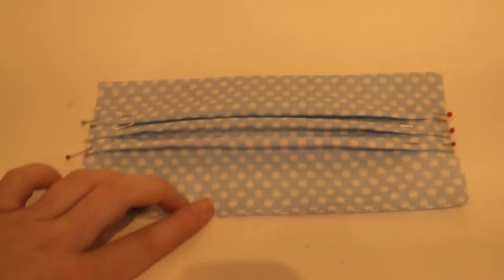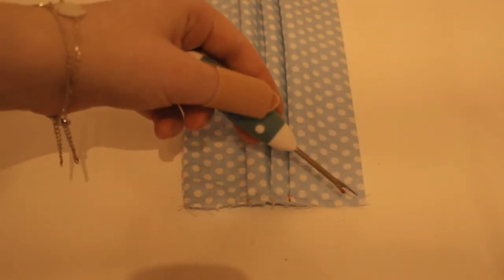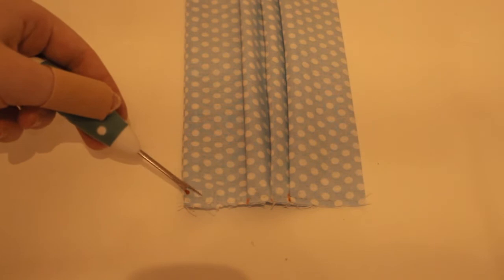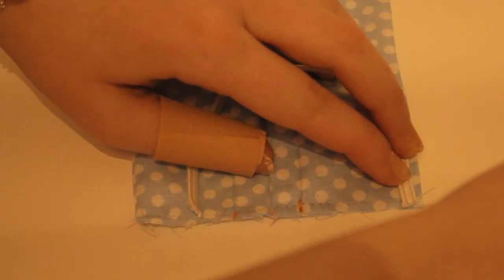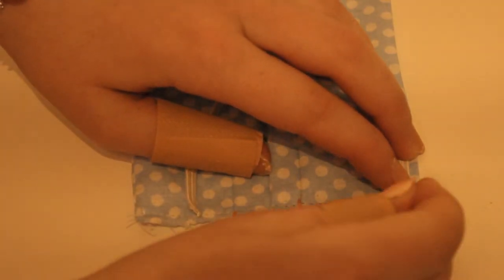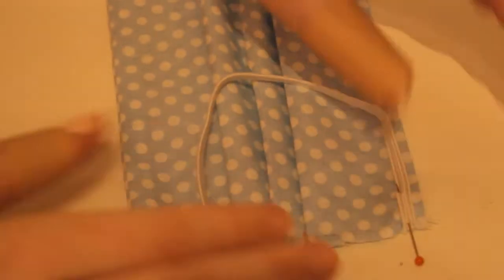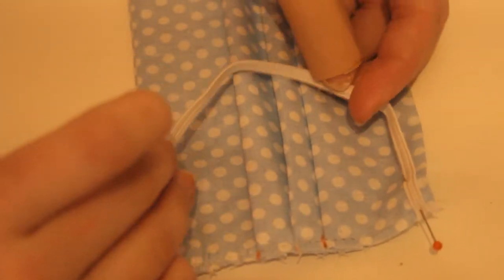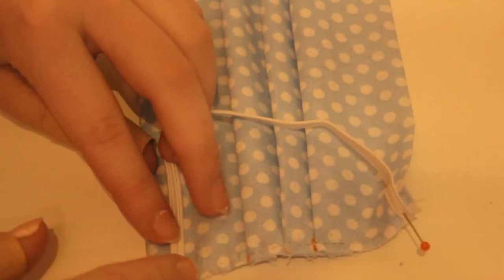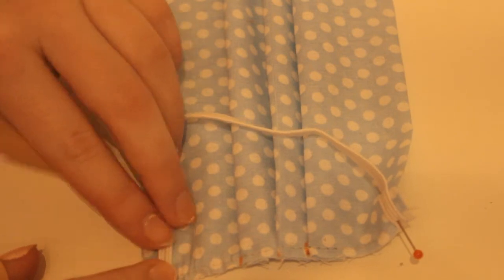So you want to sew along this outer line and secure the little folds. And for the elastic I just eyeballed where I wanted it to go. You don't want it to go exactly on the edge there, you want to keep like a few millimeters of distance there and just secure it real quick.